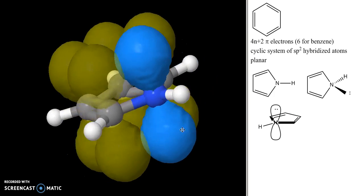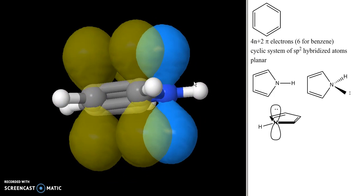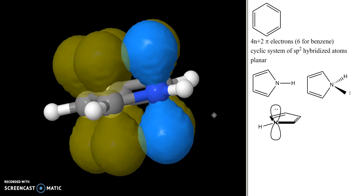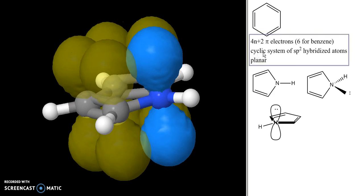We get something like this with this nitrogen trigonal planar, its p orbital which contains these lone pairs conjugated with all of the other p orbitals in this system. This gives us six pi electrons, a cyclic system of sp2 hybridized atoms, and the molecule is planar, so pyrrole is aromatic.